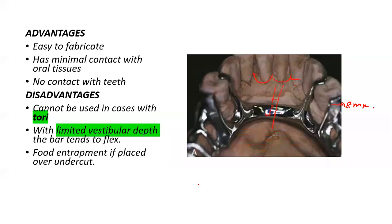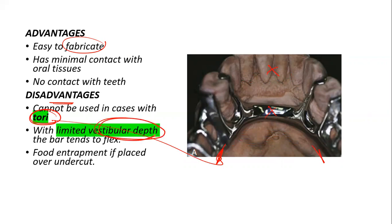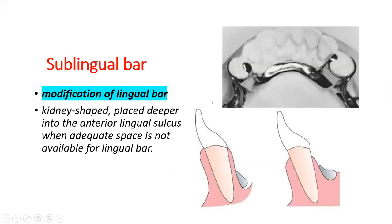The advantages of the lingual bar are that it's easy to fabricate, has minimal contact with soft tissues, and no contact with the teeth. The disadvantage is it cannot be used in cases with mandibular tori or in cases with limited vestibular depth, since you need eight mm from the floor of the mouth.